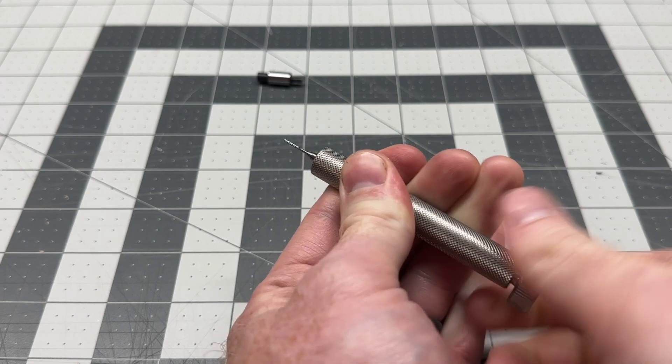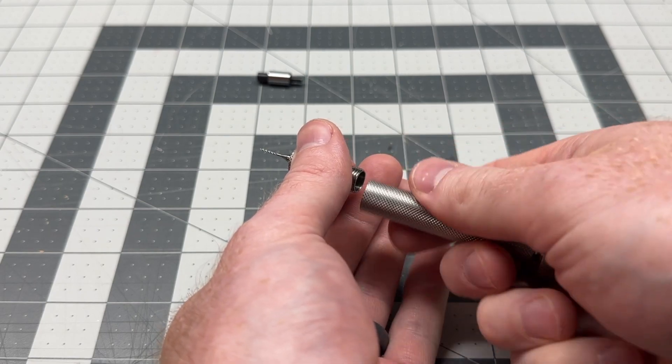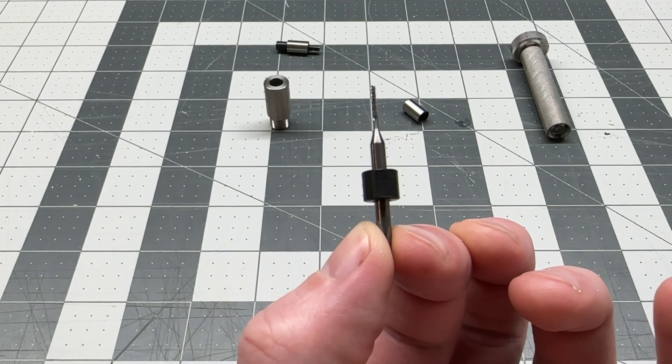When the handle is fully threaded back into the installer, our bit is at the correct depth for our Carvera tool changer. Unscrew the cap and remove the bit to install it into the Carvera.